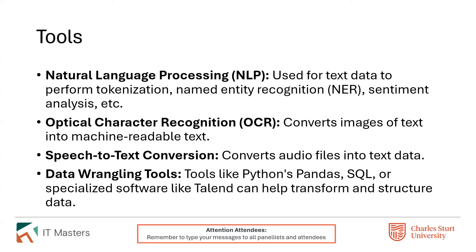Tools we can use include natural language processing, which we typically use on text data for tokenization and named entity recognition — coming up with topics and key phrases. We have OCR, which converts images of text into something digital systems can interpret. Speech-to-text converts audio files into text, after which we can use NLP to break down individual components. We also have tools like Pandas, SQL, or other specialized software that help us manipulate and transform unstructured data into a structured form for more efficient and cost-effective storage and querying.